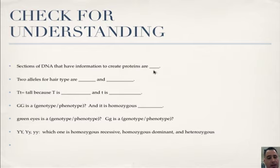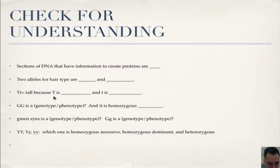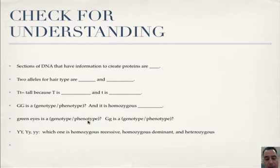Check for understanding: Sections of DNA that have information to create proteins are genes. Two alleles for hair type are wavy hair and curly hair. Big T and little t is still tall because big T is dominant and little t is recessive. Big G and big G is a genotype — an allele combination — and it is homozygous dominant. Green eyes is a phenotype because we're talking about physical appearance. Big G little g is heterozygous, and little g little g is homozygous recessive.